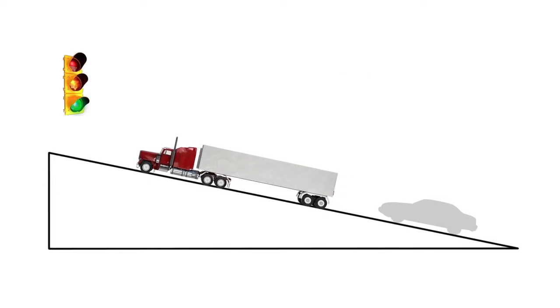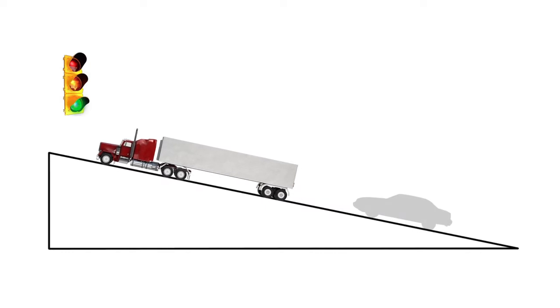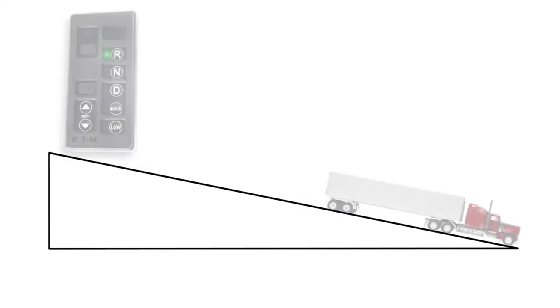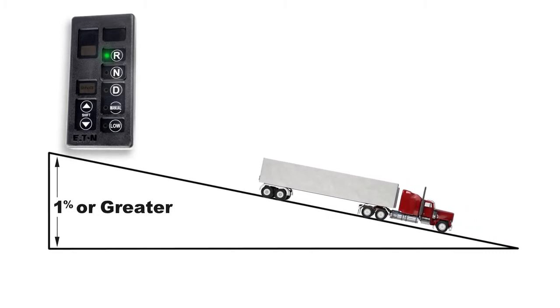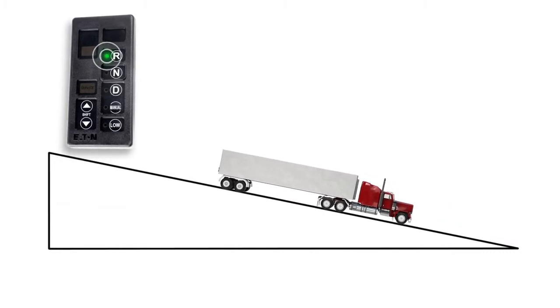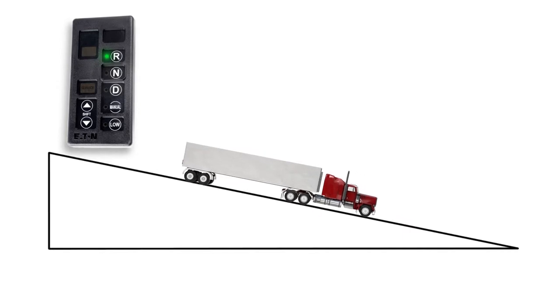Similarly, when the vehicle is facing downhill on a decline greater than 1%, Hill Start Aid is automatically enabled while in reverse mode. Bring the vehicle to a stop by pressing and then releasing the service brakes.